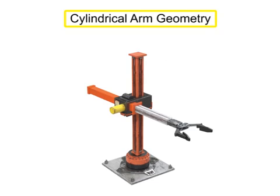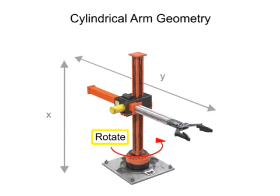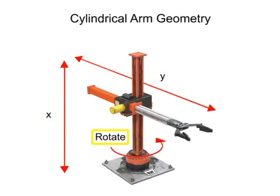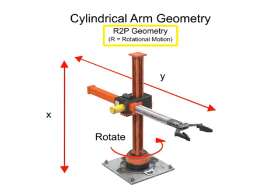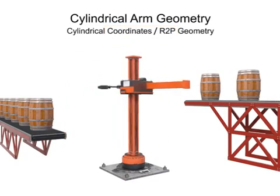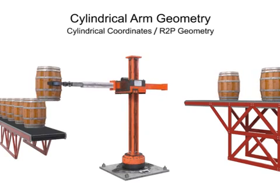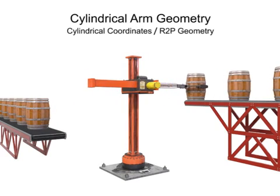Cylindrical arm geometry robots move linearly in two directions and rotate in one other. Since this type of robotic arm moves in two separate prismatic or linear directions and rotates in one direction, it's given the designation of R2P, where the R stands for rotational. This type of robotic arm is most often used in machine tending, assembly, material handling, and palletizing operations.